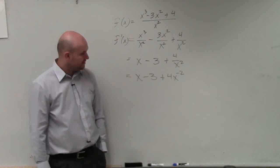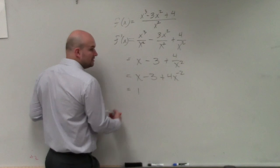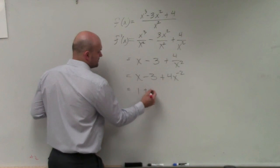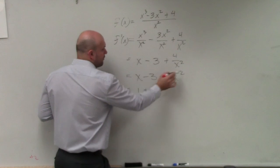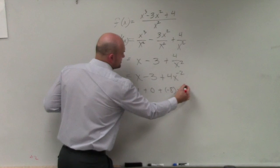Now, as I go ahead and apply the derivative, the derivative of x is just going to equal 1. The derivative of my constant is going to be 0 plus or minus 0, it doesn't really matter. And then here, I'm going to have 4 times negative 2, so it's going to be negative 8 times x to the negative third.